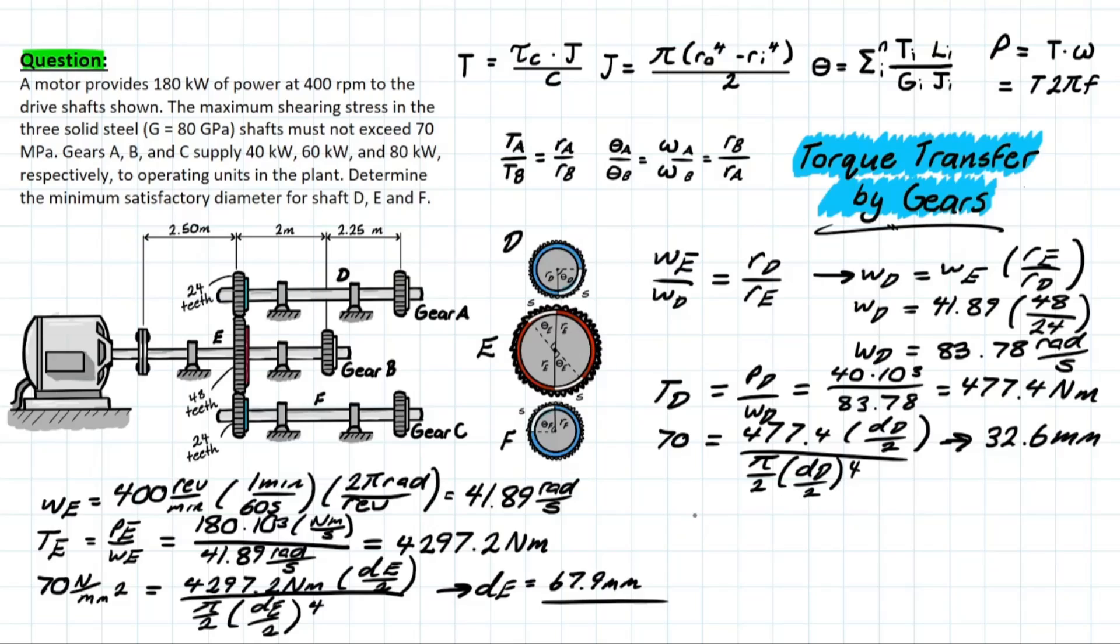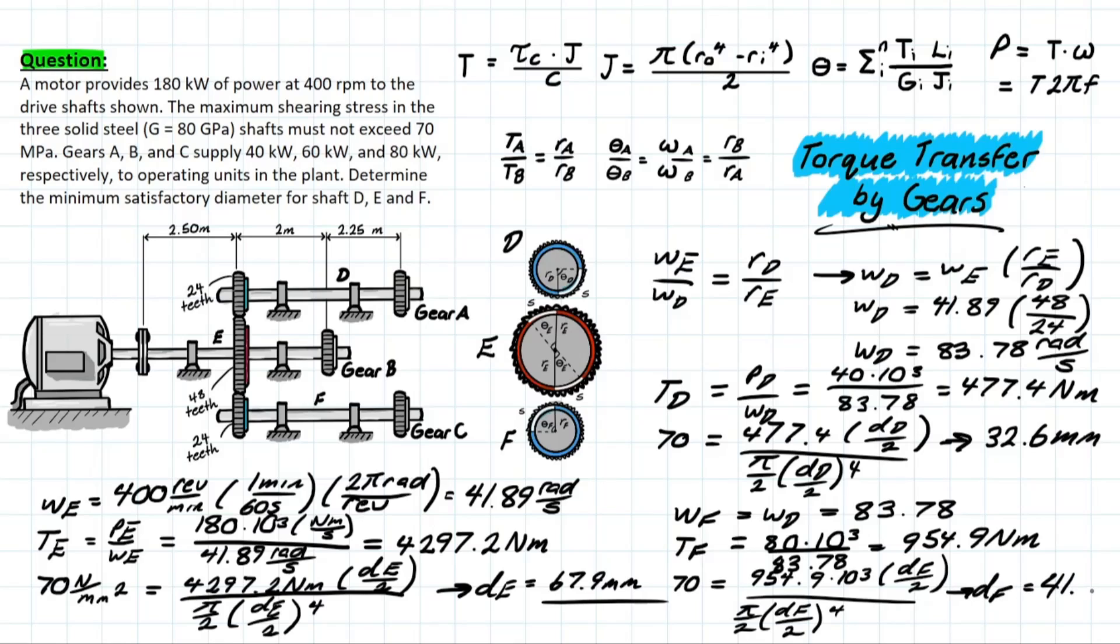I'm just going to skip ahead to the final answer, but it's using the same type of logic for shaft F, because the number of teeth in shaft F is the same as D, so we're using that 2 to 1 relationship in this relationship up here. WF is going to be equal to WD, which is 83.78 once again, and we're plugging that in to solve for the torque at shaft F and the diameter. That will leave you with a final answer for DF equal to 41.1 millimeters.